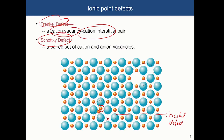A Frenkel defect is not necessarily just a pair — there may be multiple types of defects associated with it depending on the charges involved, so it is sometimes called a Frenkel group. Another type of defect in ionic crystals is the Schottky defect, which is a pair of cation and anion vacancies of opposite charges indicated together.